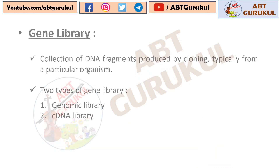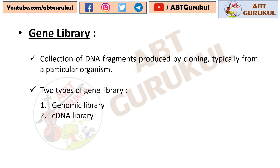Now, coming to the topic. A gene library is a collection of DNA fragments produced by cloning, typically from a particular organism. There are two types of gene library: first, genomic library, and second, cDNA library.